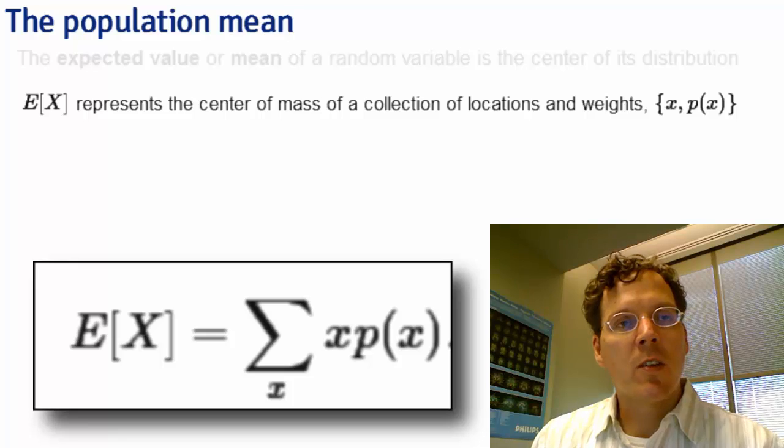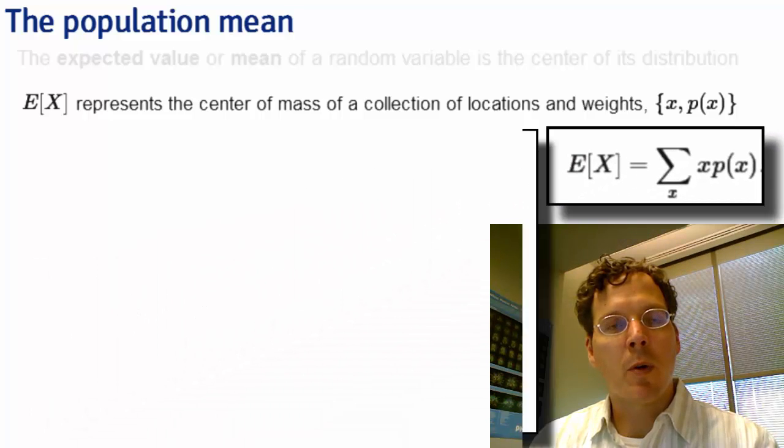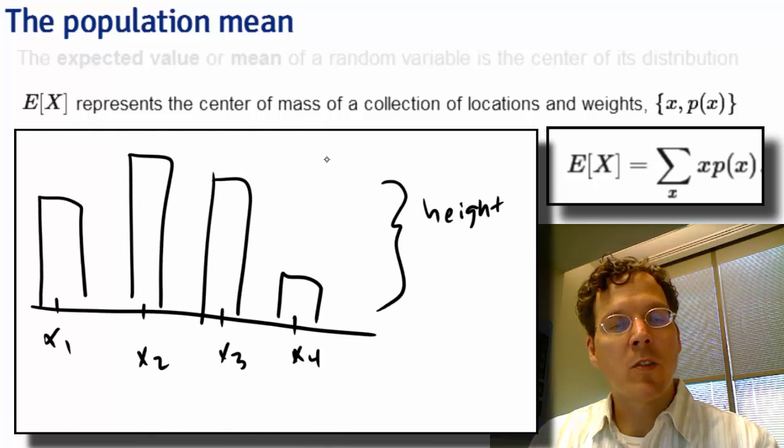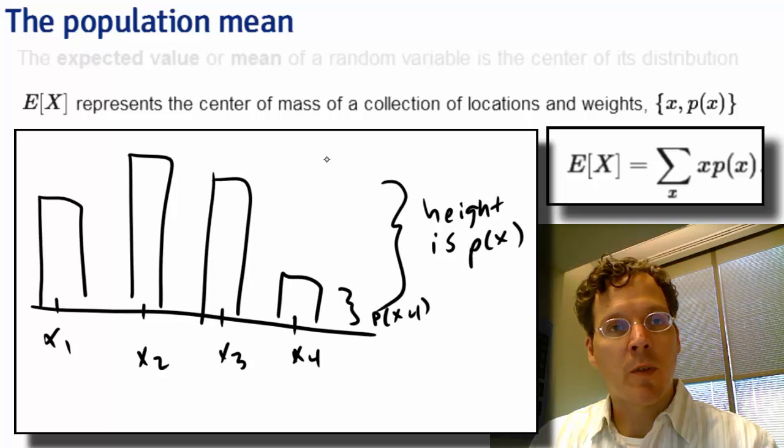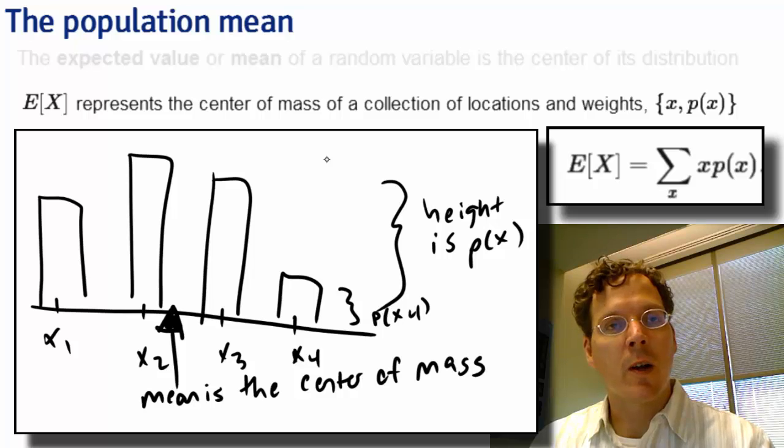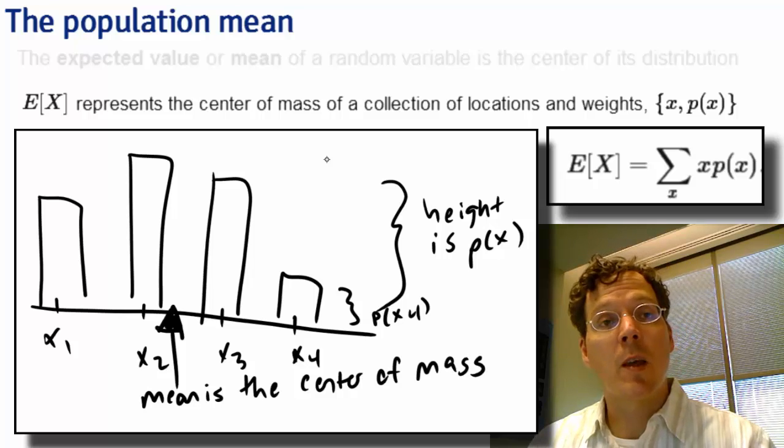The expected value takes its idea from the physical center of mass. If the probabilities were bars where their weights were governed by the value of the probability and X was the location along an axis, the expected value would simply be the center of mass. We'll go through some examples of that in a moment.